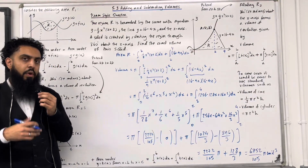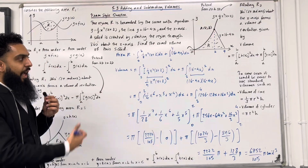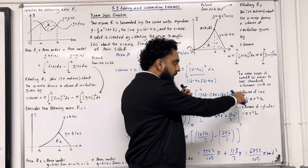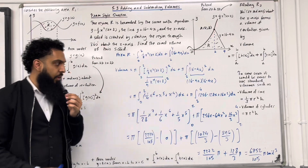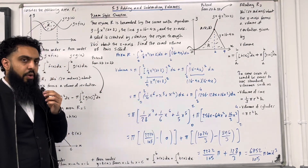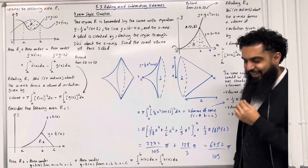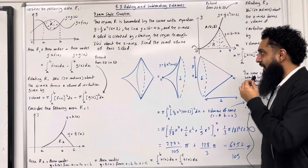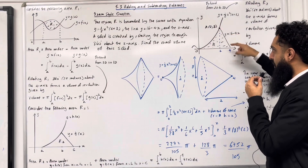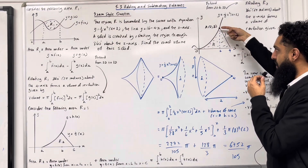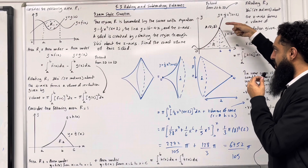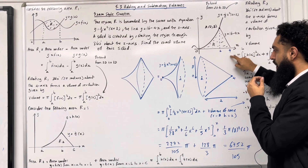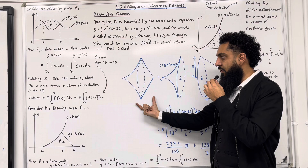Now I'm going to go through another method where we can easily calculate this using the formula for the volume of a cone. Taking area R and rotating it 360 degrees about the x-axis between x = 0 and x = 4 creates the following solid of revolution.